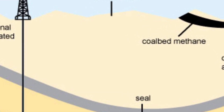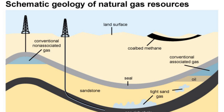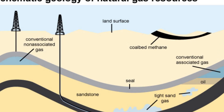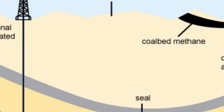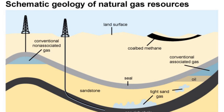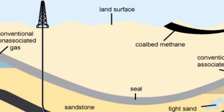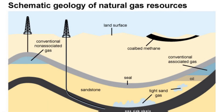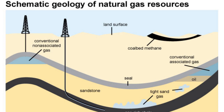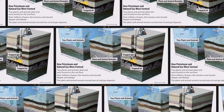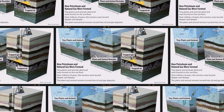As natural gas formed over time, it moved into large cracks and spaces between layers of overlying rock. The natural gas found in these types of formations is sometimes called conventional natural gas. In other places, natural gas occurs in the tiny pores and spaces within some formations of shale, sandstone, and other types of sedimentary rock. This natural gas is referred to as shale gas or tight gas, and it is sometimes called unconventional natural gas.